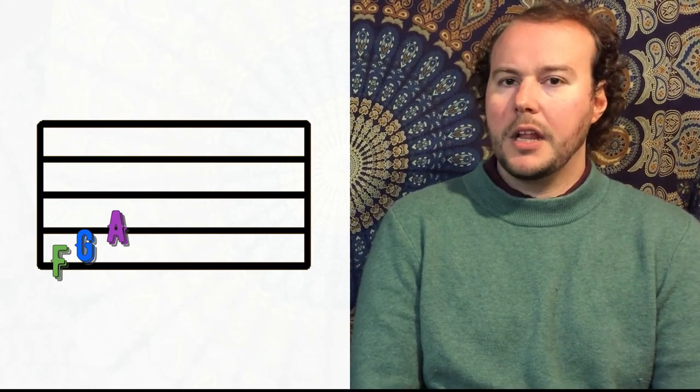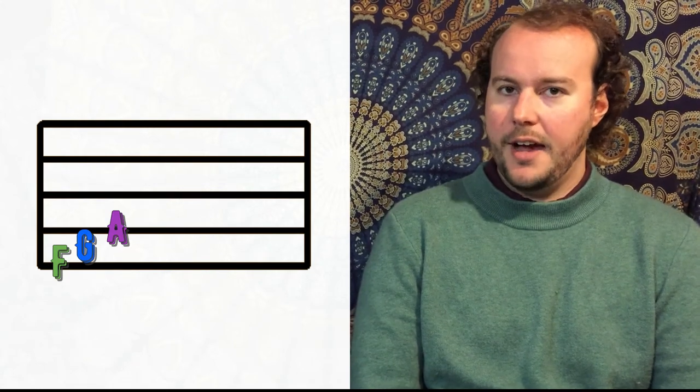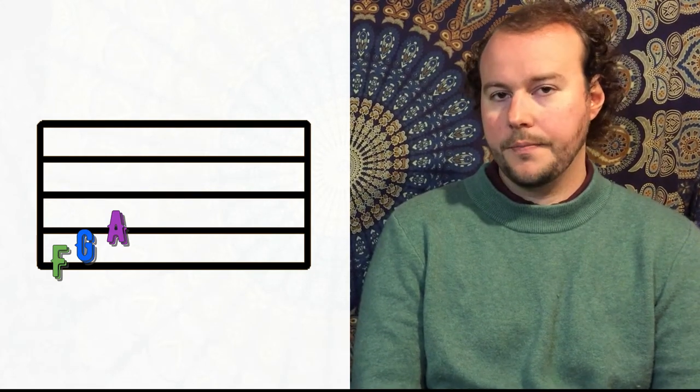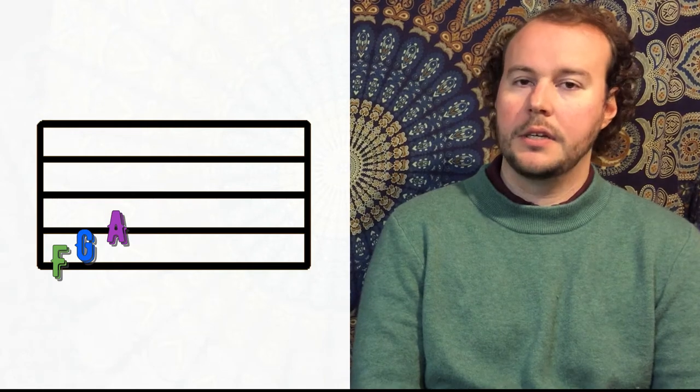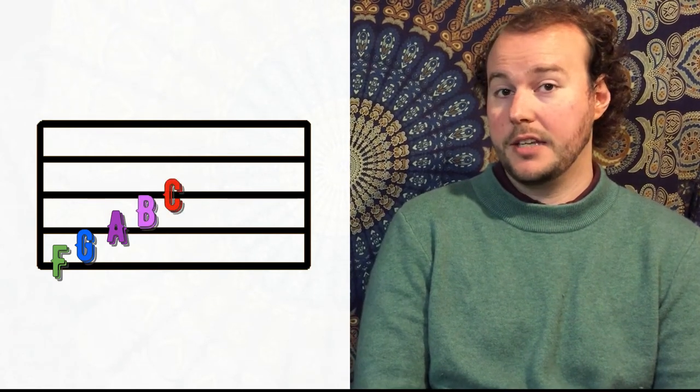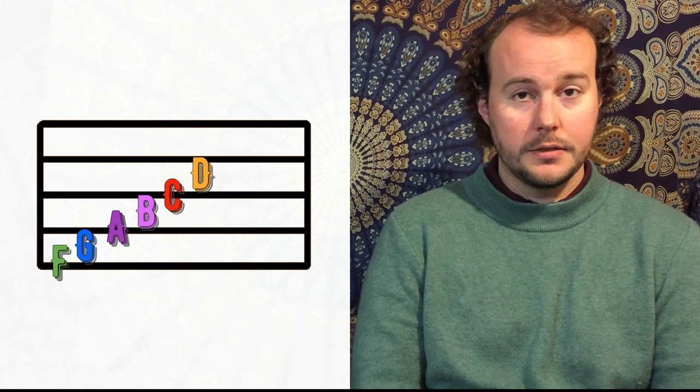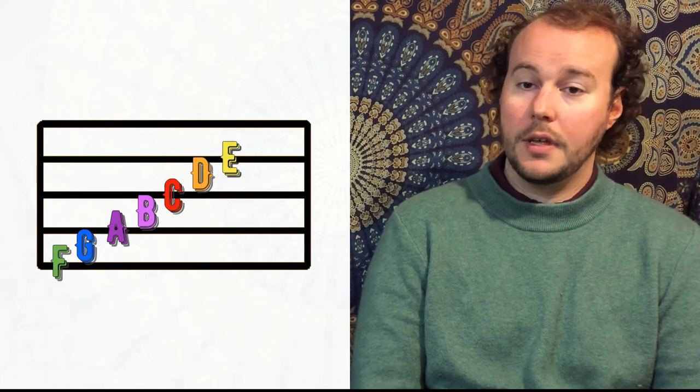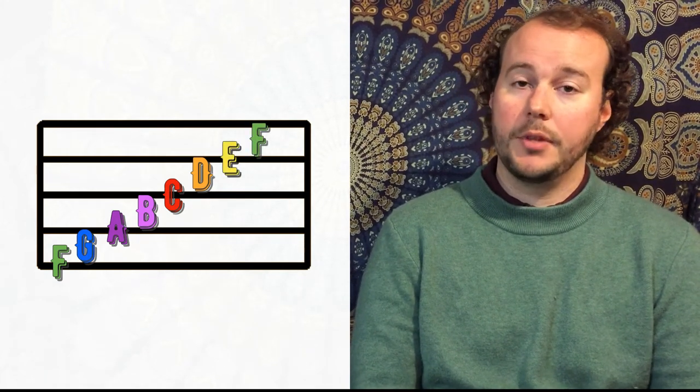So let's just keep spelling our staff. So we have F, G, A, B, C, middle line C, D, E, F, and then our top line is G.